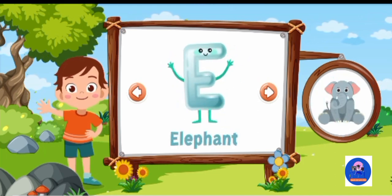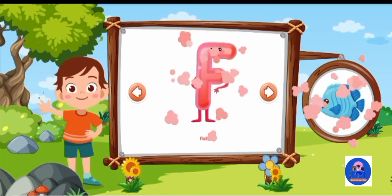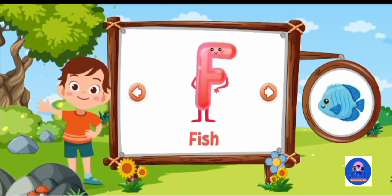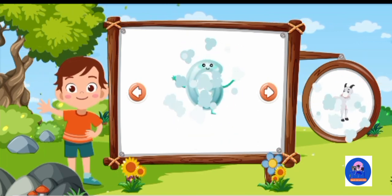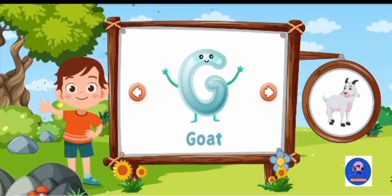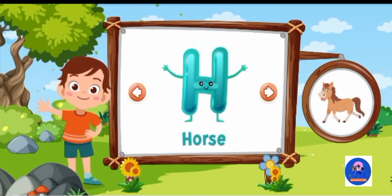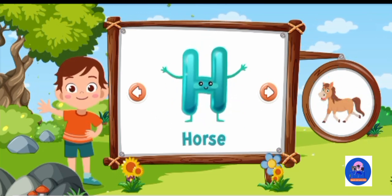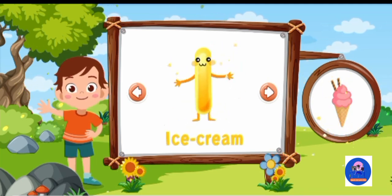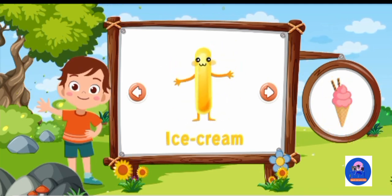E for elephant. F for fish. G for goat. H for horse. I for ice cream.